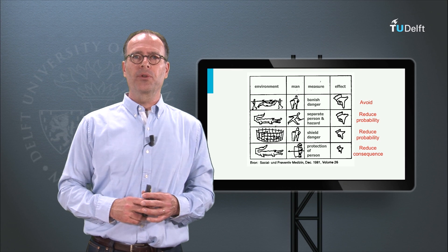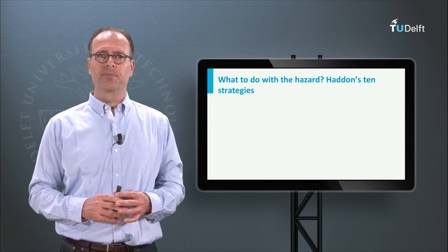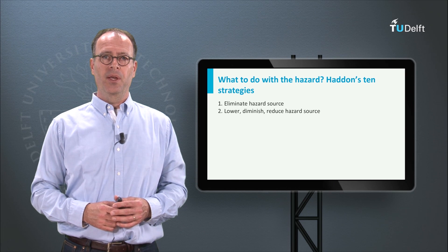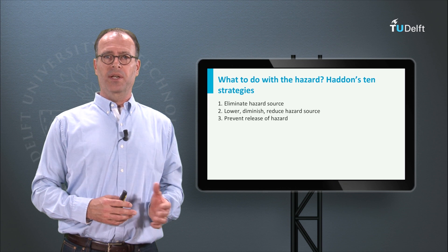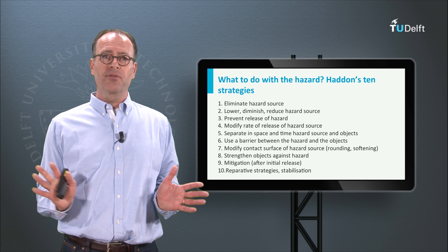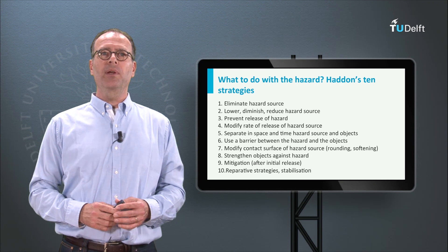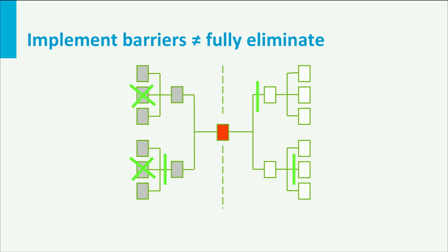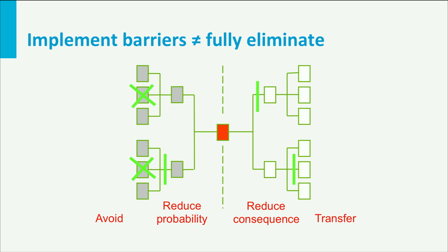Haddon was a medical doctor who thought about all possible strategies and ranked them in order of effectiveness. Elimination of the hazard is the most effective, followed by lowering the hazard source. We can then prevent the release of the hazard, followed by modifying the release. Haddon thus defined ten different strategies, with the last strategies pertaining to coping with the consequences in a particular way. Interestingly, we can also project Haddon's strategies on the bowtie discussed earlier — we have the time before controls are lost and after controls are lost, coping with the consequences. So we can try to avoid, reduce probabilities, reduce consequences, or transfer the risks by insuring them, or live with them.